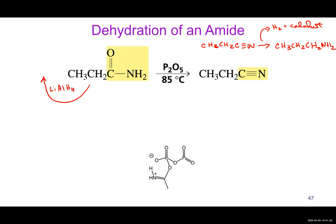P2O5 at 85°C dehydrates the amide to a nitrile — the oxygen essentially ends up with the P2O5. Another important reaction of nitriles is hydrolysis: H2O with H+ and heat converts the nitrile to a carboxylic acid. This is synthetically powerful — you can start with an alkyl halide, do an SN2 reaction with CN minus to add a carbon, then hydrolyze to a carboxylic acid. Nitriles are versatile: they can be converted to carboxylic acids or to primary amines, which are otherwise hard to make.